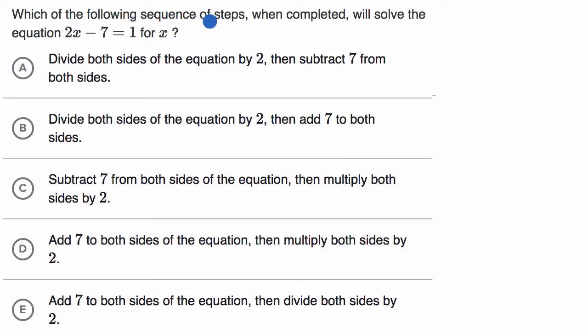We're asked which of the following sequence of steps, when completed, will solve the equation 2x - 7 = 1 for x. So pause this video and see if you can figure it out on your own before we do it together.